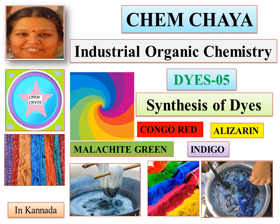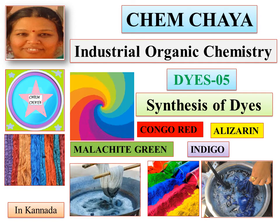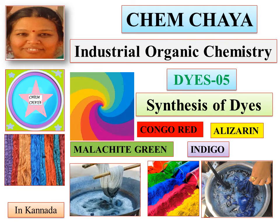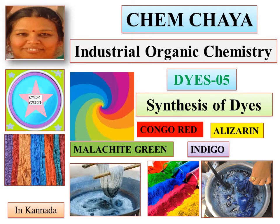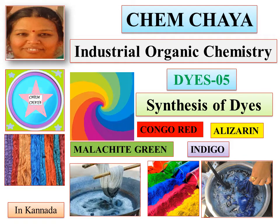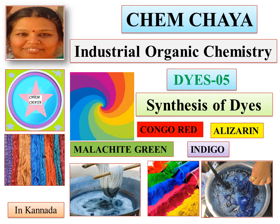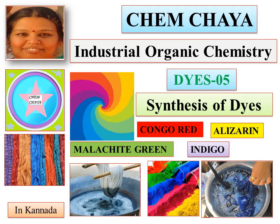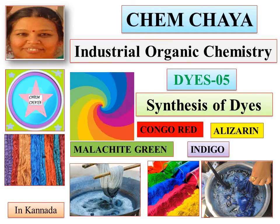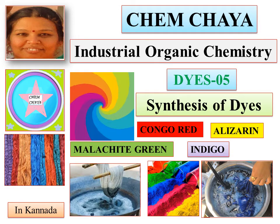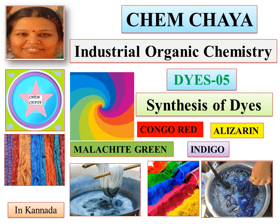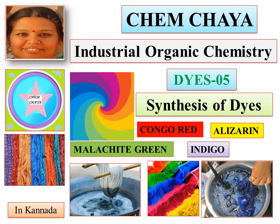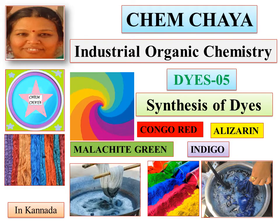In this video, we have to upload it from industrial organic chemistry. We will cover Congo Red, Alizarin, Malachite Green, and Indigo — synthesis of dyes. We have 4 videos about the dyes. What are the different theories related to the colors of the dyes? Welcome to KEMCHAYA. Subscribe and share.